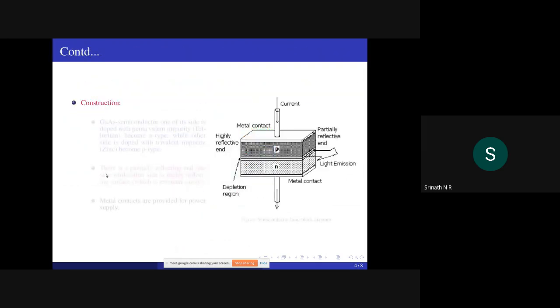Construction: The gallium arsenide semiconductor laser - one of its ends is doped with pentavalent impurity atoms like tellurium to become n-type, whereas the other side is doped with trivalent impurity atoms like zinc to become p-type.